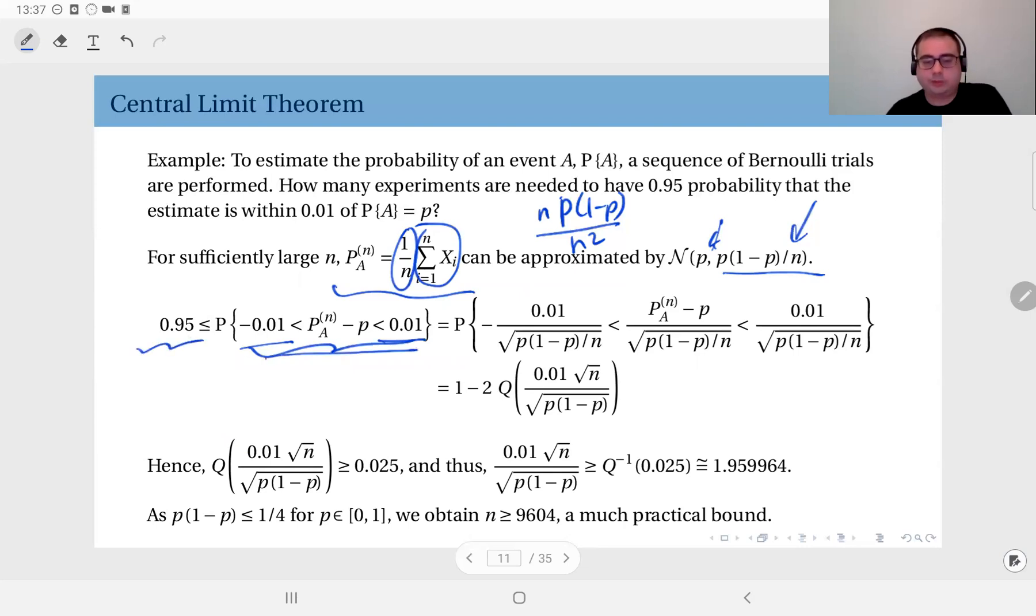So we can write this event in this form, which means I'm standardizing this probability estimate by subtracting its mean from it and dividing it by its standard deviation.